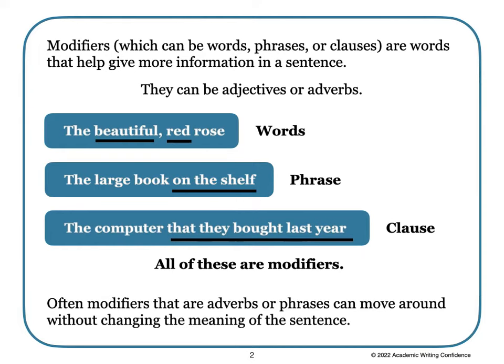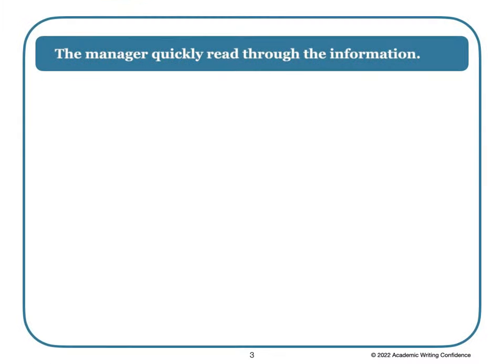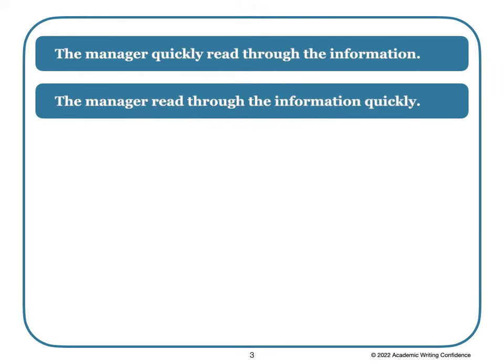Often modifiers that are adverbs or phrases can move around without changing the meaning of the sentence. For example: 'The manager quickly read through the information.' We could also write it as 'The manager read through the information quickly.' You can see that we can move the word 'quickly' to different positions in the sentence and it still means the same thing.